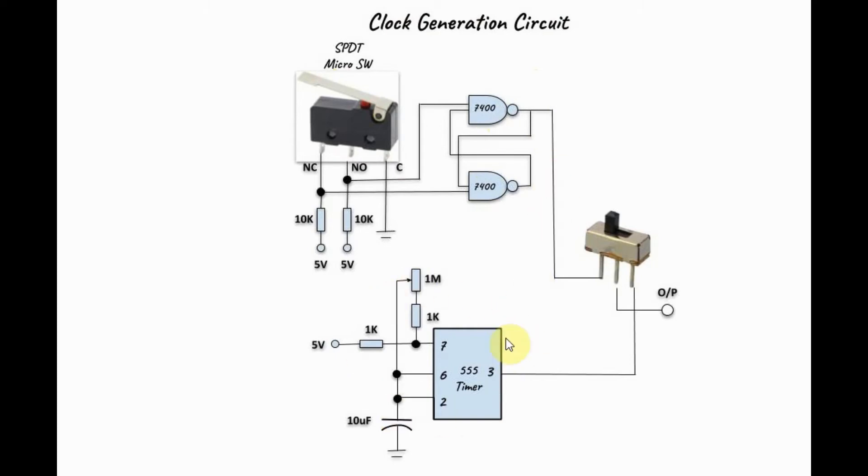The free running clock signal is generated by using this 555 timer circuit running in astable mode. The outputs are connected to this slide switch to give us the desired output.